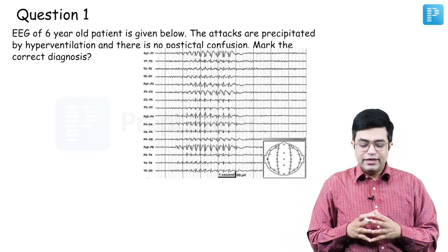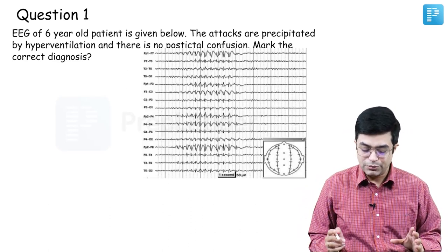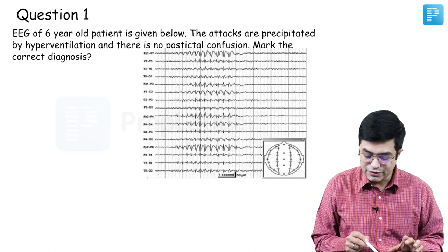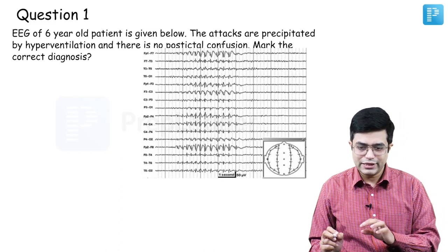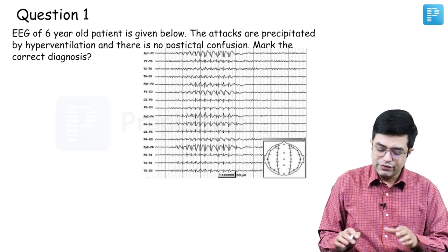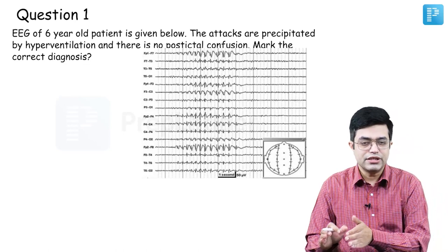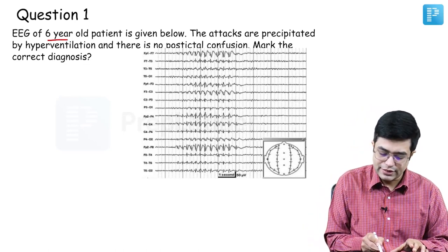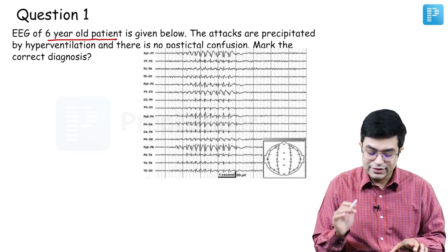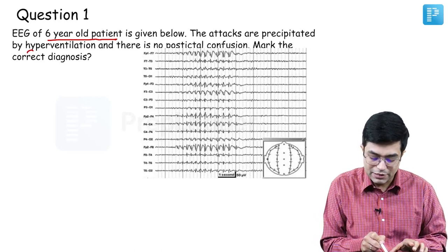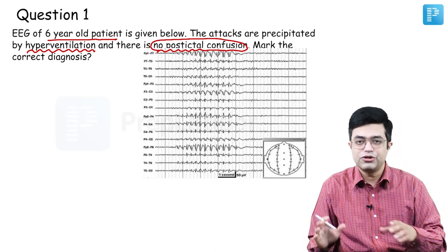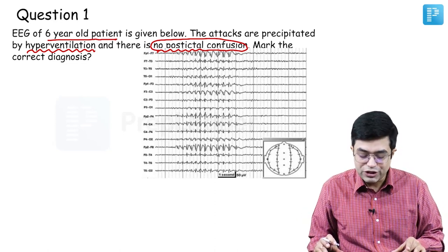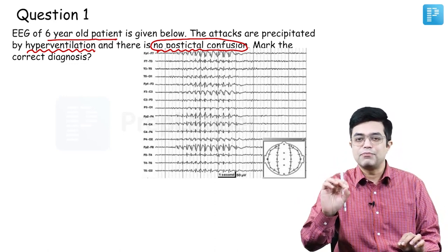Question number one: EEG of a six-year-old patient is given. The attacks are precipitated by hyperventilation and there is no post-ictal confusion — mark the correct diagnosis. They have made a clinical scenario and given an EEG-like picture, so even if you don't know how to read an EEG you can make the diagnosis. It is a six-year-old patient, not a newborn. Seizures are happening precipitated by hyperventilation — a very important clue — and no post-ictal confusion means the patient immediately resumes normal activity. Such a picture is typically seen in absence seizure.